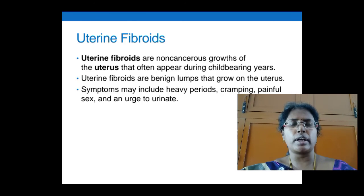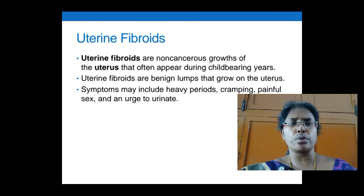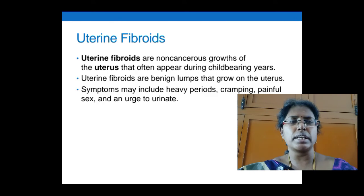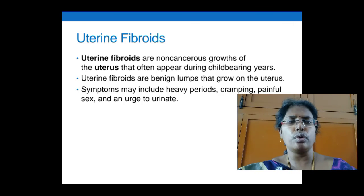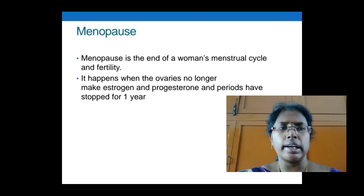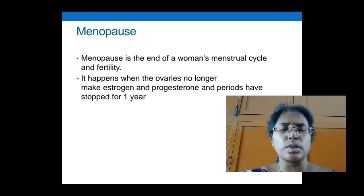The next condition is uterine fibroids — non-cancerous growths of the uterus that appear during the childbearing or reproductive years. Uterine fibroids are benign lumps that grow on or in the uterus. Symptoms may include heavy periods, cramping, painful sex, and an urge to urinate frequently.